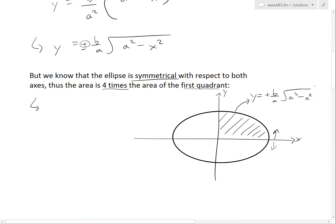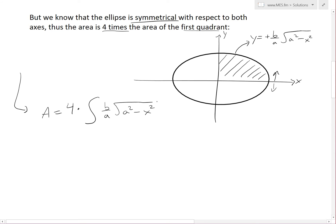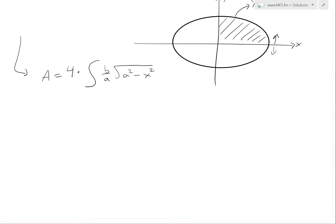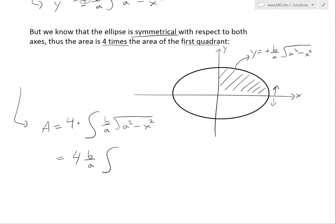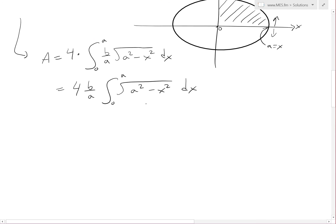The area of the ellipse equals four times the integral of this function. So: Area = 4 · (b/a) · ∫ from 0 to a of √(a² − x²) dx. We go from 0 to a because that covers the first quadrant. Since b/a are constants, we factor them out, giving 4(b/a) ∫₀ᵃ √(a² − x²) dx. Now we can apply trigonometric substitution to this integral.